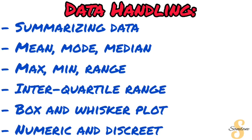When studying Data Handling, the first thing is summarizing data. For summarizing data, you need to be comfortable with the calculation of the mean, mode, and median. You also have to be able to identify the maximum and minimum values from your data, as well as calculating the range — knowing that the formula for range is simply the maximum minus the minimum. You must be able to identify those values before you can calculate the range.